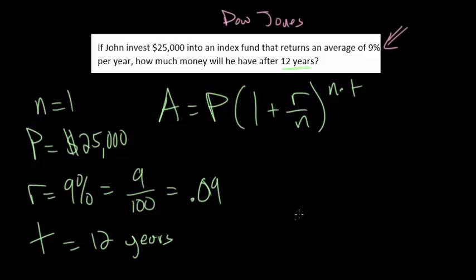At this point, we can just plug everything into our formula. A is 25,000 multiplied by 1 plus our rate, which is 0.09, divided by 1. And then we have 1 for N times T, which is 12, so this is all raised to the 12th power.